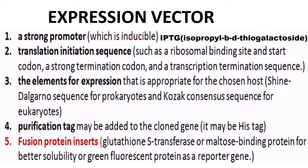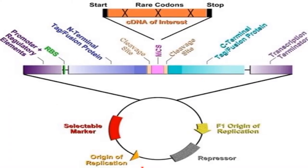This is the picture of the expression vector. It consists of a promoter plus a regulatory element, ribosome binding site, N-terminal tag or fusion protein insert, and a cleavage site where you will find the multiple cloning site in which you insert the gene of interest. For eukaryotes, the gene of interest should be a cDNA. This gene of interest consists of a start codon and a stop codon.